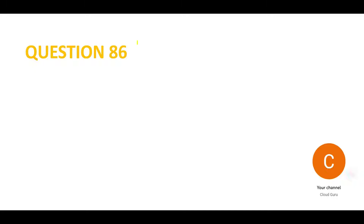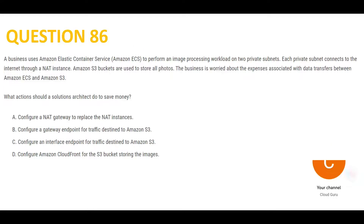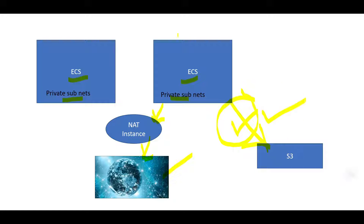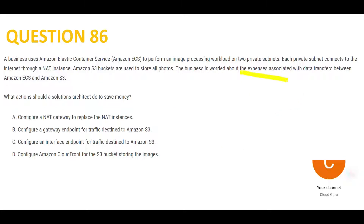For previous questions, please refer parts 1 to 22 of this playlist. You have ECS on two private subnets and there is a NAT instance being used to connect with the internet. You have to access files from S3. The question is talking about this portion — when you access this piece here, the business doesn't want to spend a lot of money; they want to curb expenses.